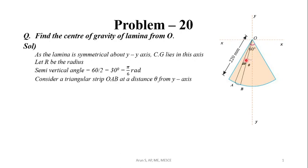Now we will choose a small rectangular strip OAB which is at a distance theta from the Y axis and having an included angle dθ. For area of this rectangular strip, the length OA into arc length AB by 2.